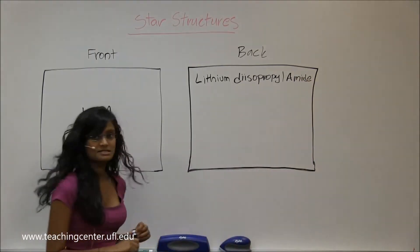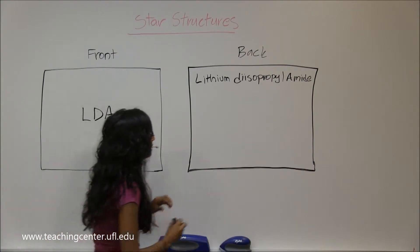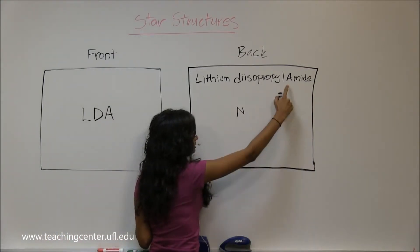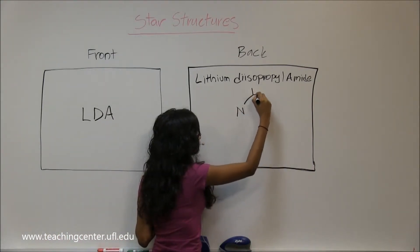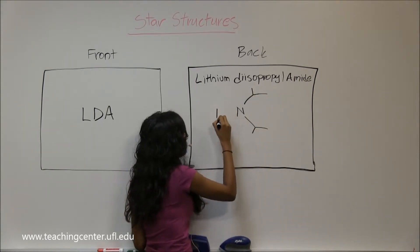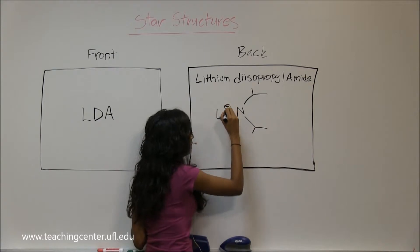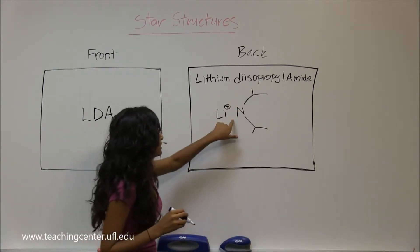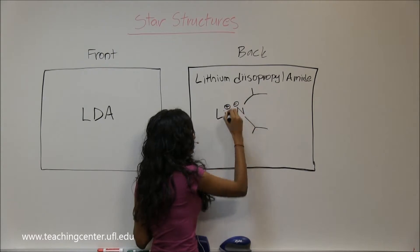Okay, so this is LDA. You have a nitrogen since you have an amide, with two isopropyl groups attached and a lithium attached. Now, you all know lithium acts as a counter ion, so this nitrogen has to have a negative charge.